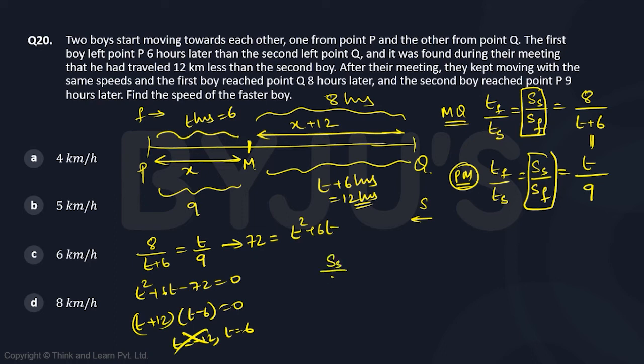So what is the speed of second boy by speed of first boy? It is T by 9, T is 6 by 9, which is 2 by 3. So let's say their speeds are second boy speed is 2a and the first boy speed is 3a. So the faster guy is 3a. So this guy is 3a and this guy speed is 2a.